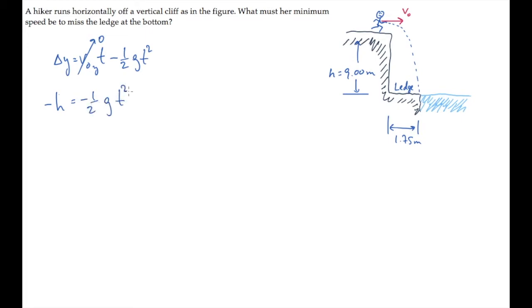And we can solve this equation for the time t she spends in the air. It's the square root of 2h over g. Substitute the values to find that she spends 1.36 seconds in the air.